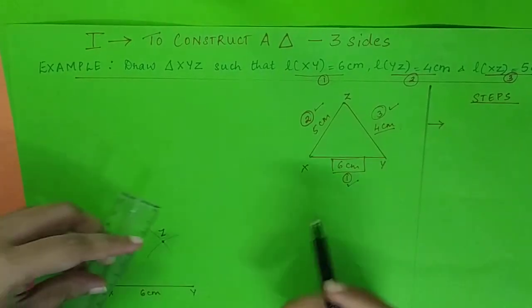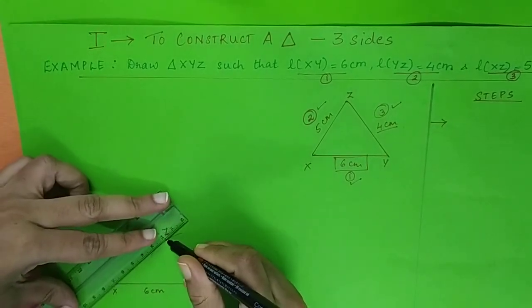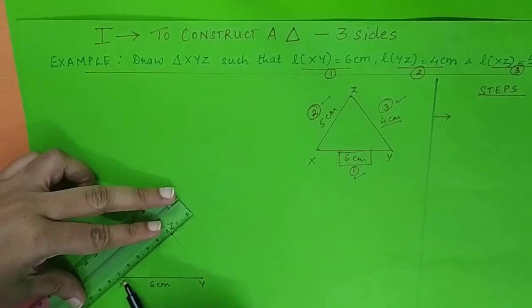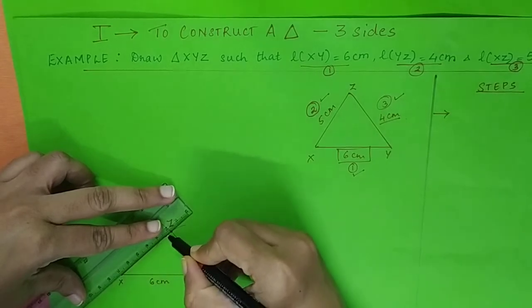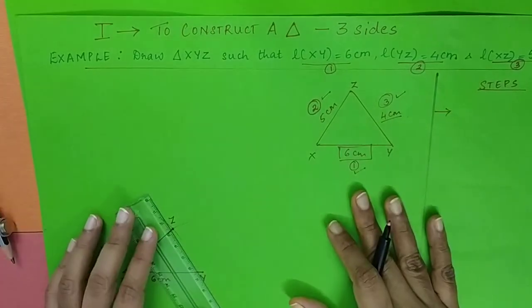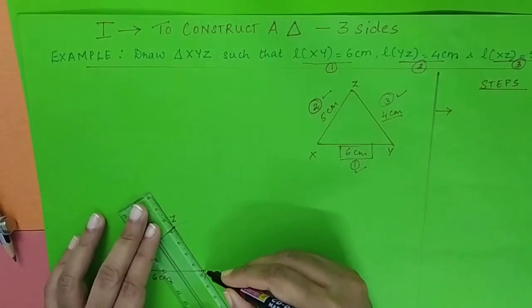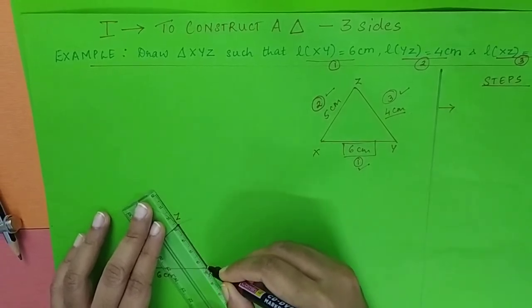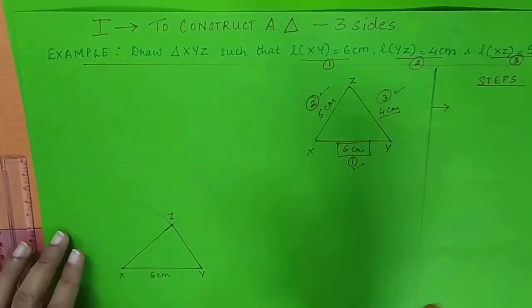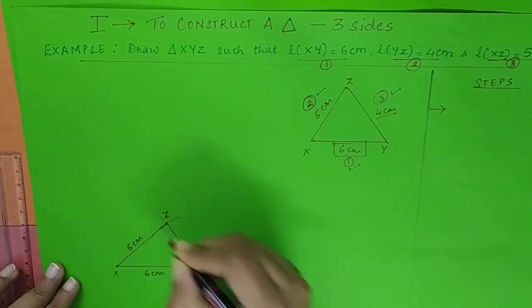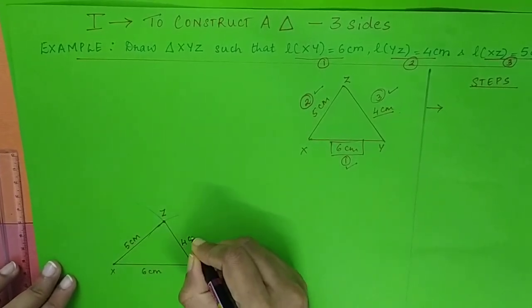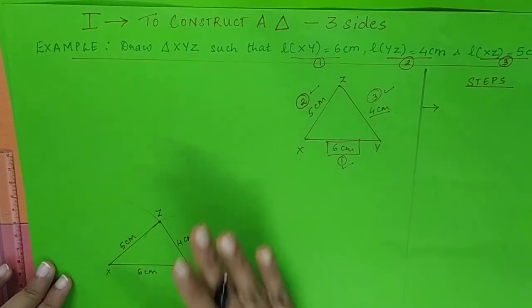So I take my scale again. I join X and Z - place the scale in a manner where point Z and point X coincide with the scale. Point Z and point Y coincide with the scale. Still I'm not done with the construction because I've got to write the length of the sides: this is 5 centimeters and this is 4 centimeters. So that completes the construction.